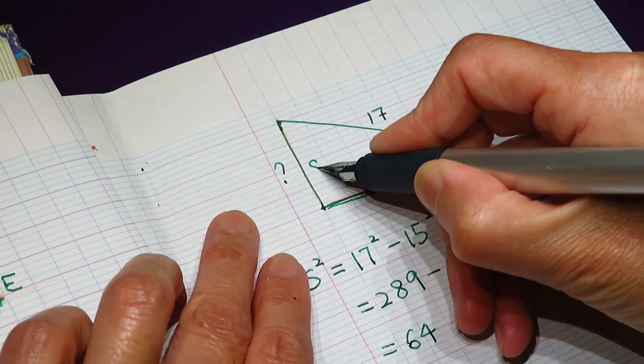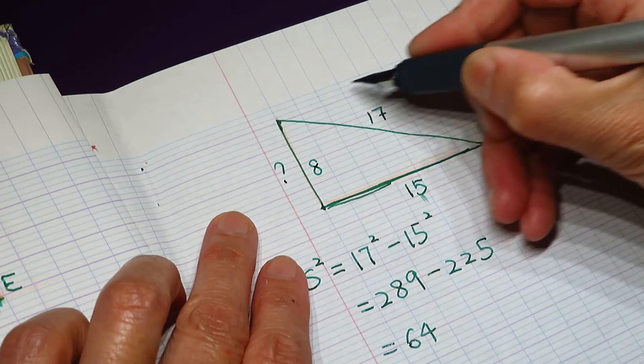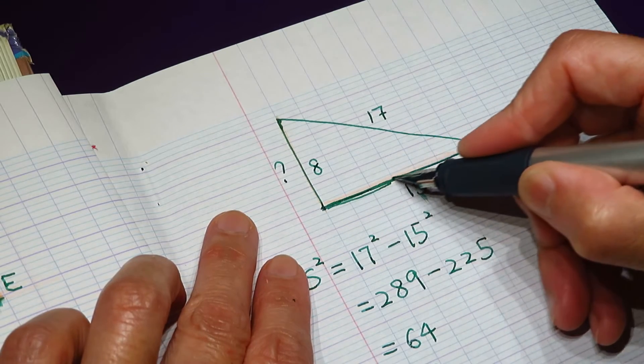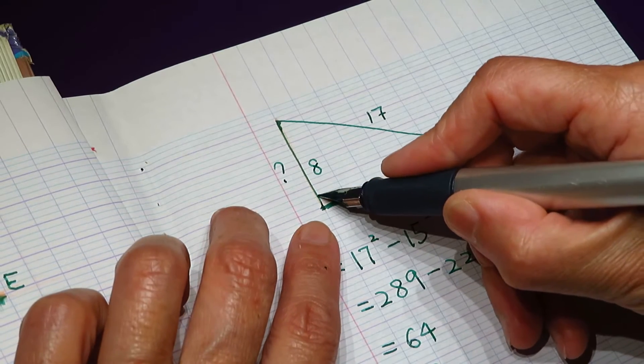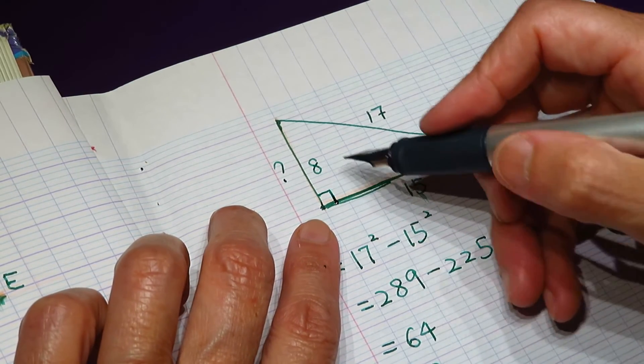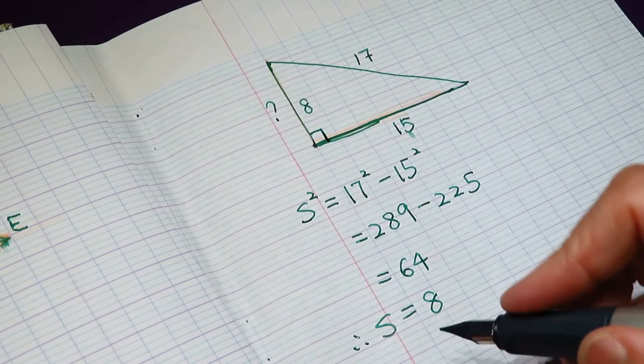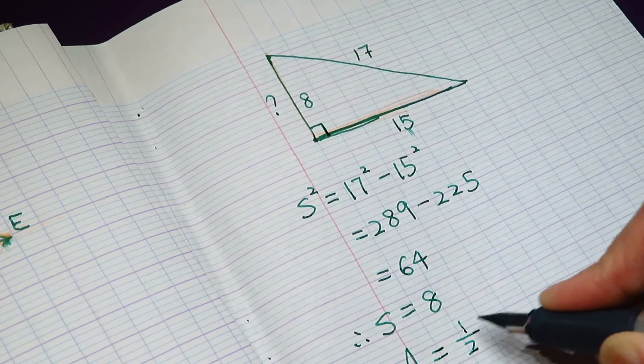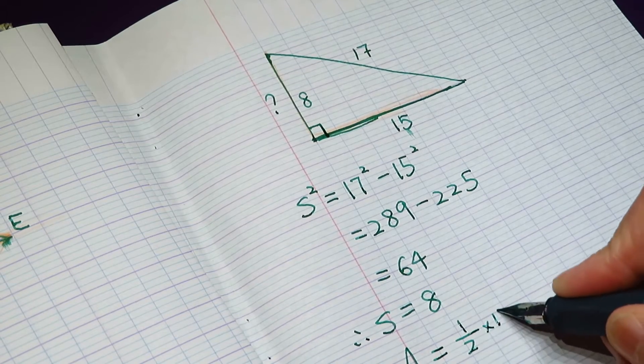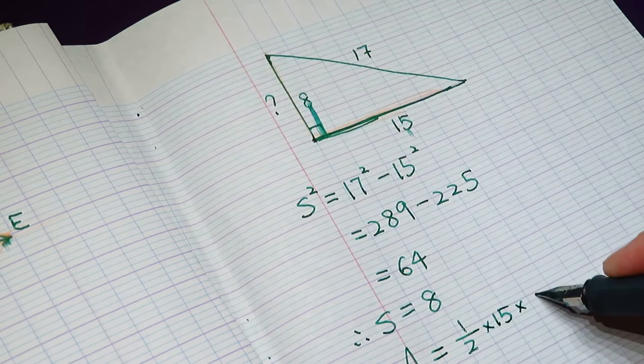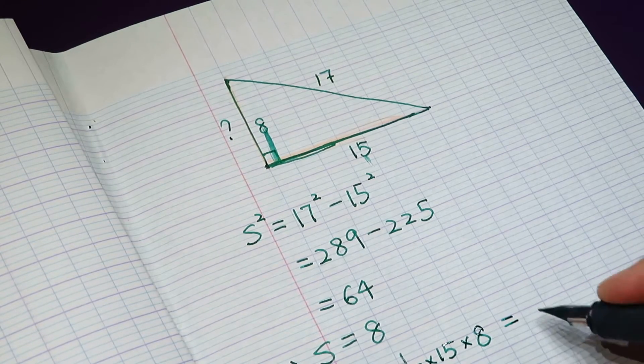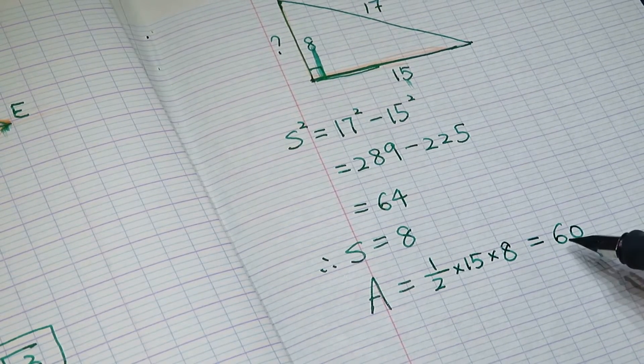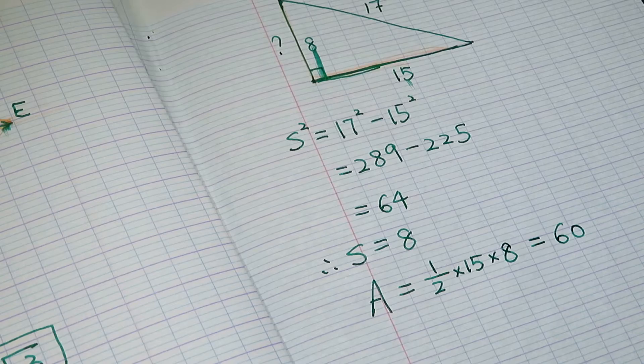Now we figure out this side is 8. The area of the triangle is the base times height. Because this is 90 degrees, they are perpendicular to each other. So the area of the triangle is half of 15 times 8 equals 60. That is the answer.